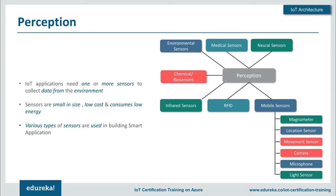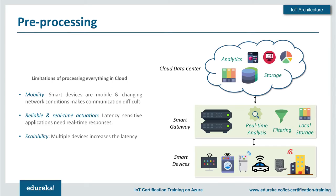A key component of the perception layer is the actuator — a device that affects a change in the environment by converting one form of energy into another, such as a motor generating electricity or a windmill converting wind into electrical energy. Actuators play an essential role in the perception layer. Before discussing the pre-processing layer, it's important to understand the limitations of processing everything on the cloud.